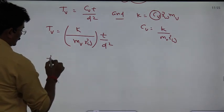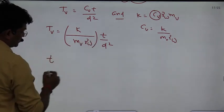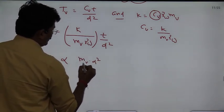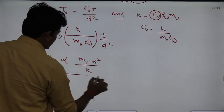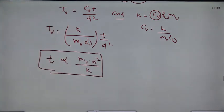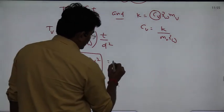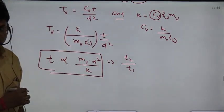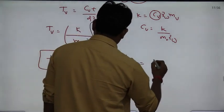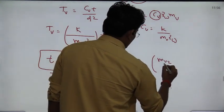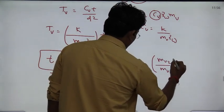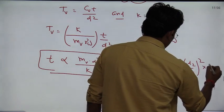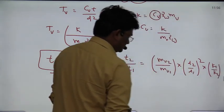Tv... T2 by T1 equals Mv2 divided by Mv1 multiplied by D2 divided by D1 whole square multiplied by K1 divided by K2.